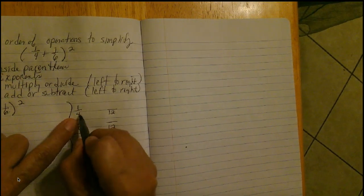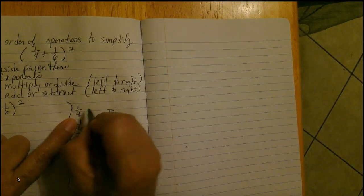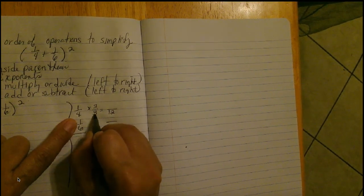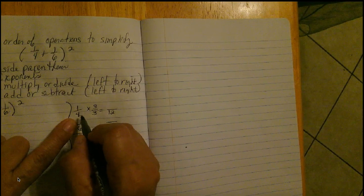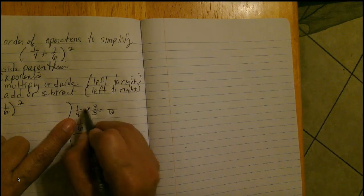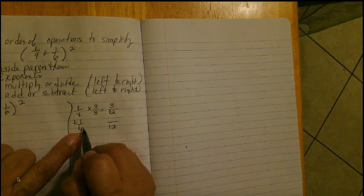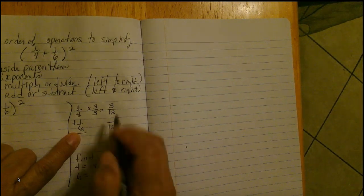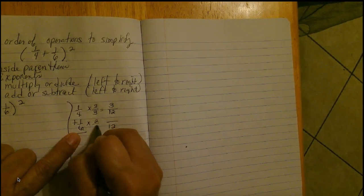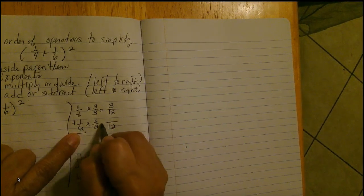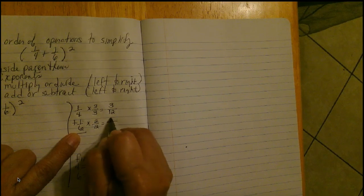So, how many times does four go into twelve? Four times three. Four times three is twelve. So, now I multiply the numerator. One times three is three. We're looking at how many times does six go into twelve? So, I multiply by two over two. Six times two is twelve. One times two is two.